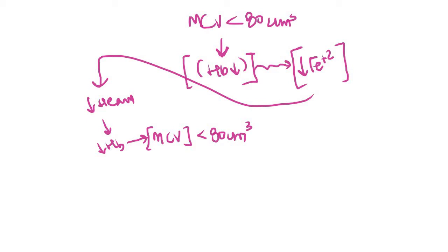This whole video will revolve around three parts: first, what is the normal metabolism of iron; second, what are the causes of iron deficiency anemia; and third, what are the laboratory findings in the case of iron deficiency anemia. So let's understand the normal physiology of iron.